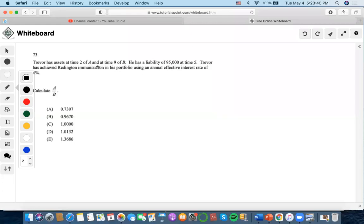So Trevor has assets at time 2 of A and at time 9 of B. Trevor has a liability at time 5 of 95k.